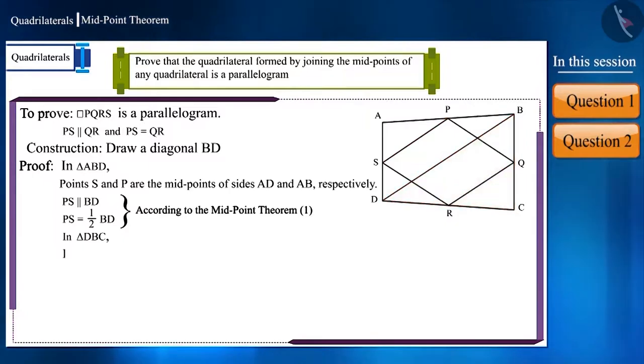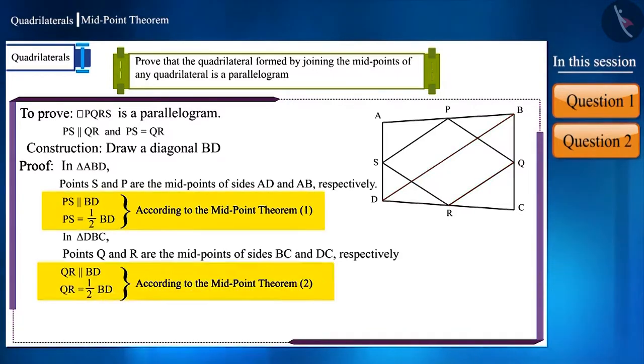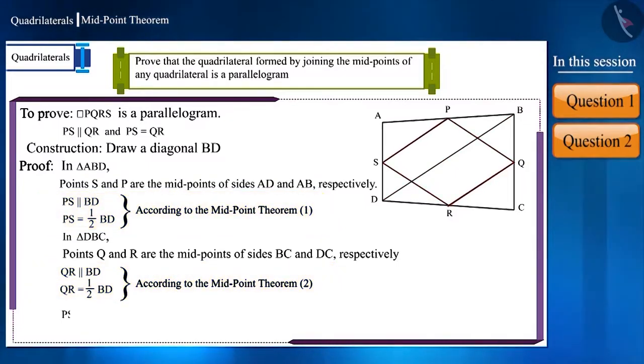Similarly, in triangle DBC, point Q and point R are the midpoints of sides BC and DC respectively. Therefore, using the midpoint theorem, we can say that sides QR and BD will be parallel and side QR will be half of side BD. By looking at equations 1 and 2, we can say that in quadrilateral PQRS, one pair of sides are equal and parallel.